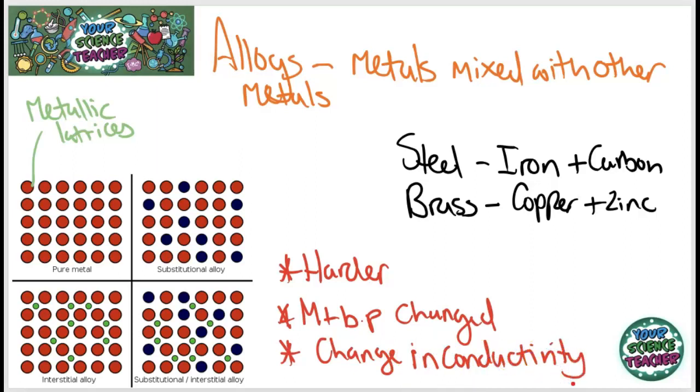But what we can do is we can change the amount of element inside that to make the properties exactly what we want. Like, for example, there's different types of steel in which we change the carbon percentage in order to alter the properties, whether we want them harder or maybe a softer form of steel.